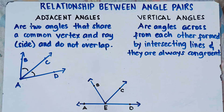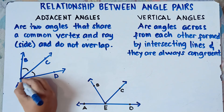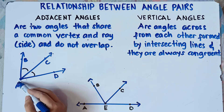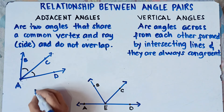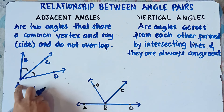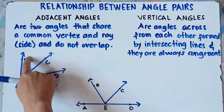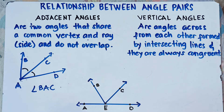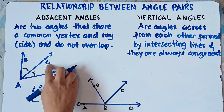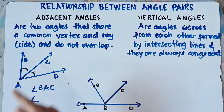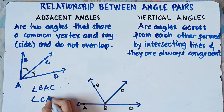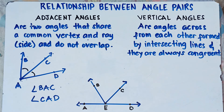I hope it's clear. Adjacent angles are two angles that share a common vertex — that is point A — and they share a common side, that is ray AC. Therefore, we can say that angle BAC is adjacent to angle CAD. You can also read it as angle CAB adjacent to angle DAC — it's up to you which you prefer.